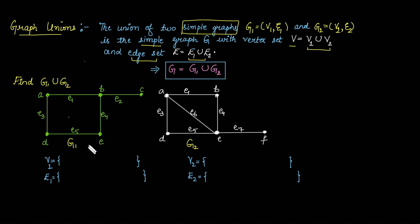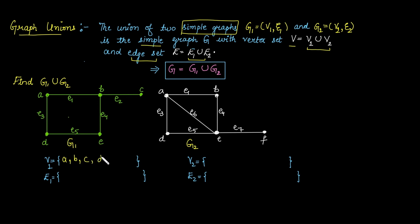For example, we have two graphs G1 and G2. In G1, the vertex set contains vertices A, B, C, D, and E. The edges in this graph are E1, E2, E3, E4, and E5.